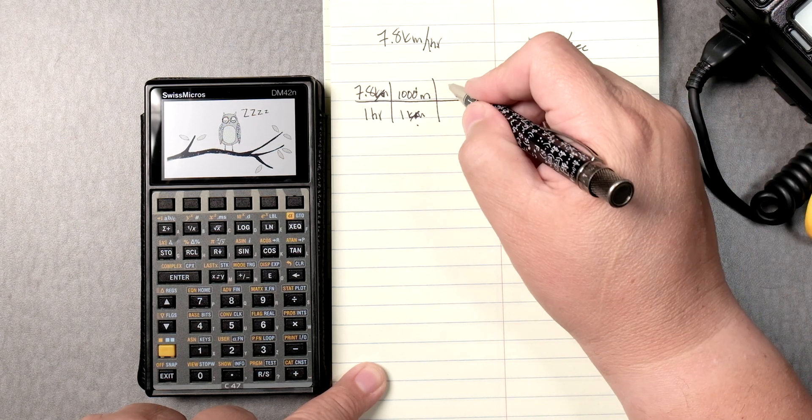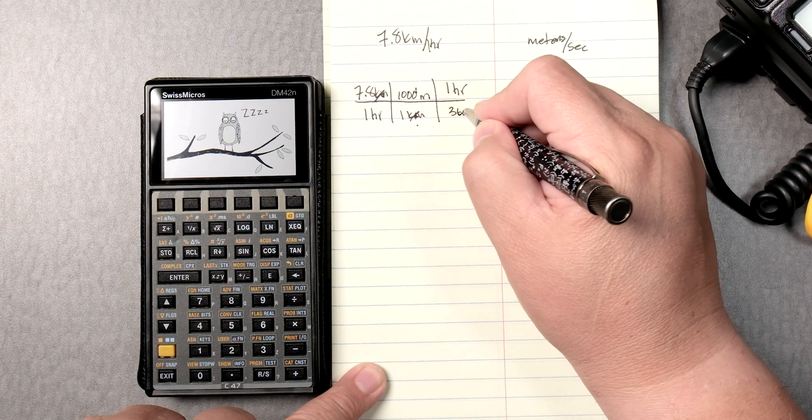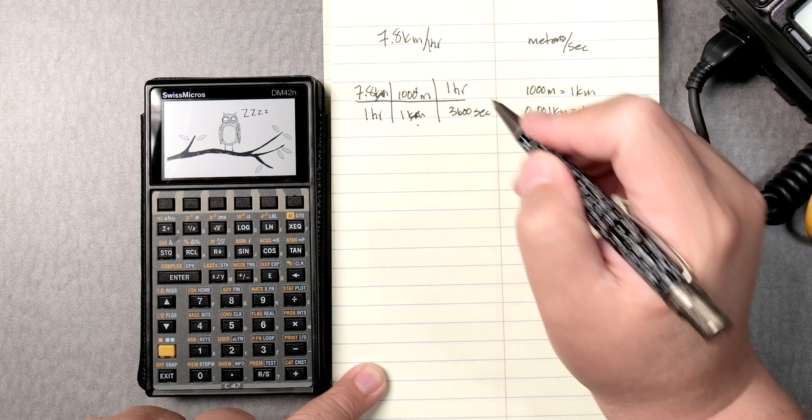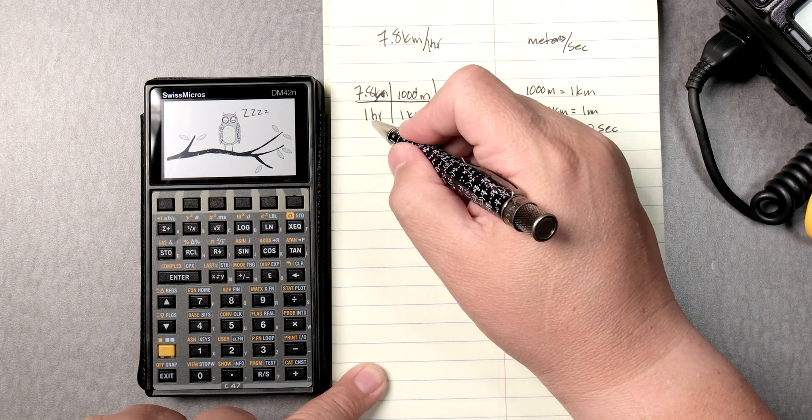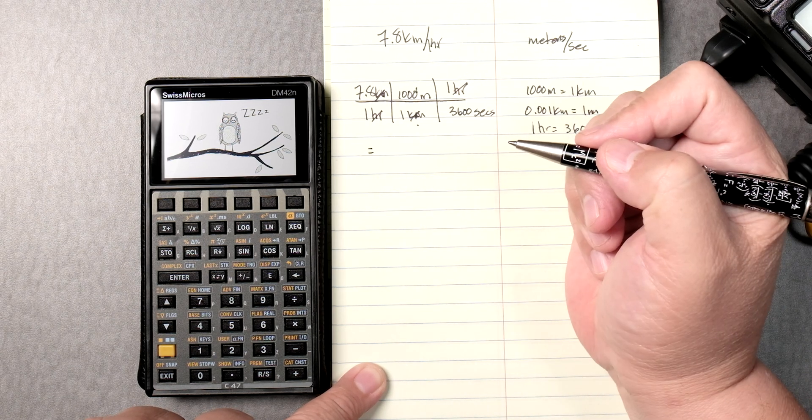Then the hours. One hour is 3,600 what? Seconds. So hours and hours cancel and we're left with 3,600 seconds.